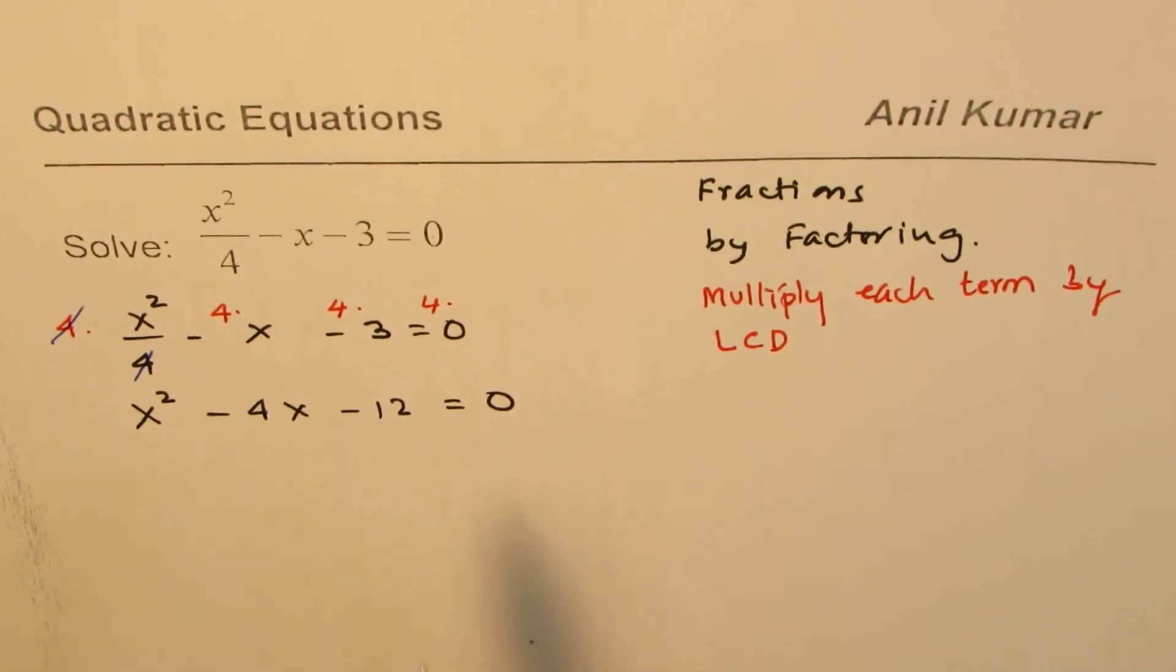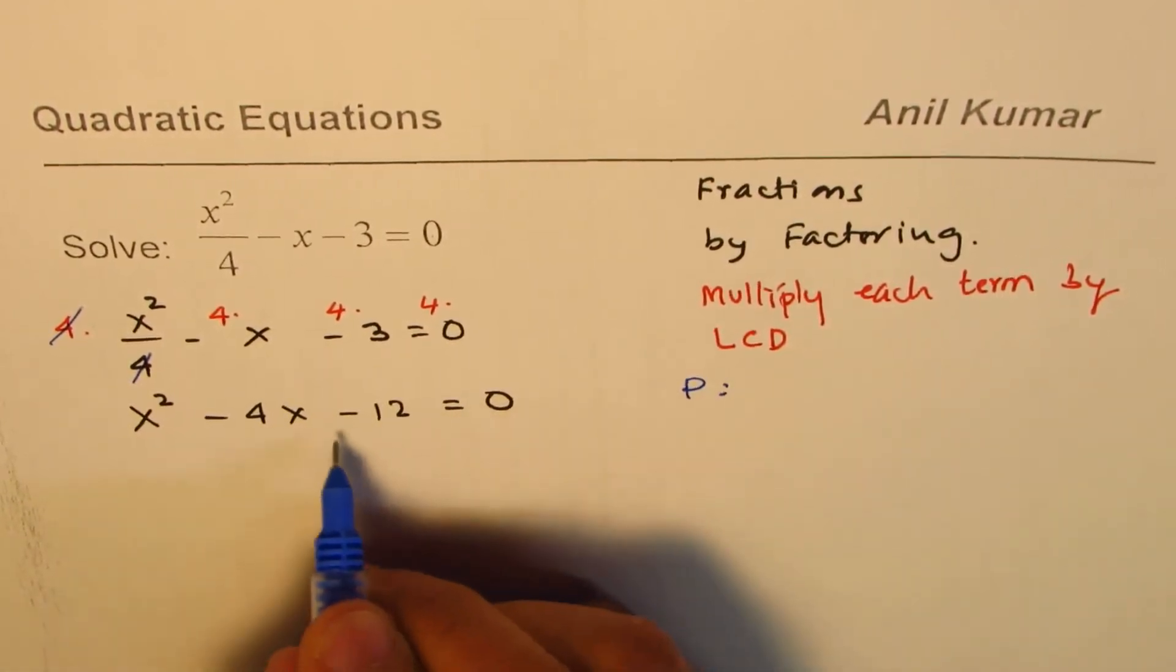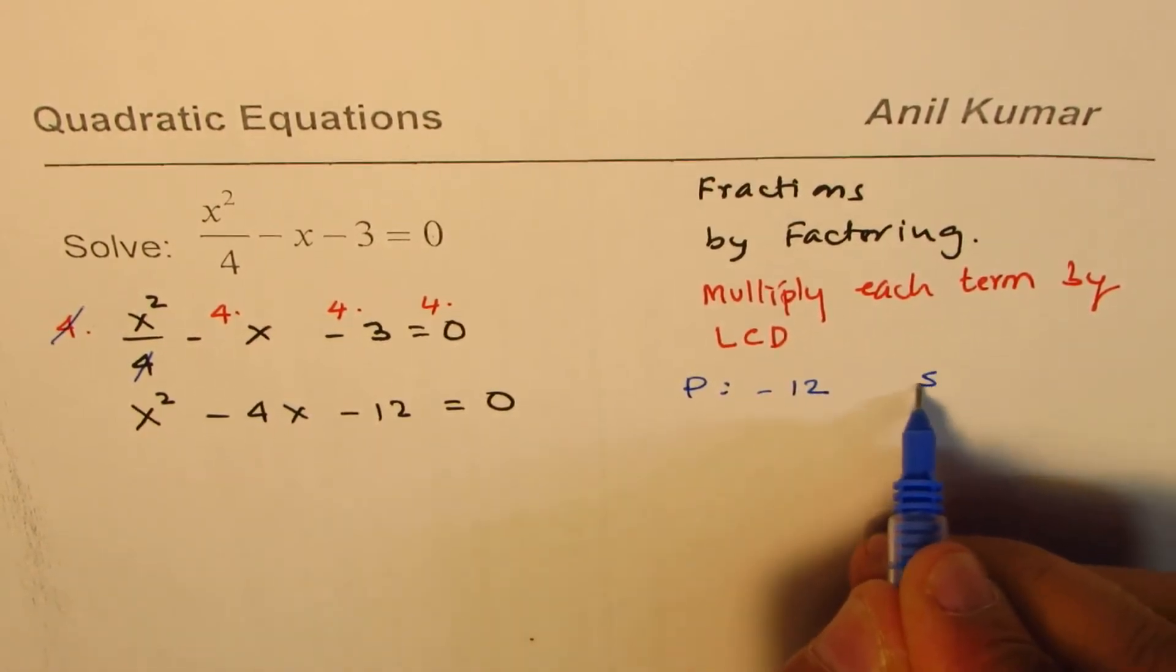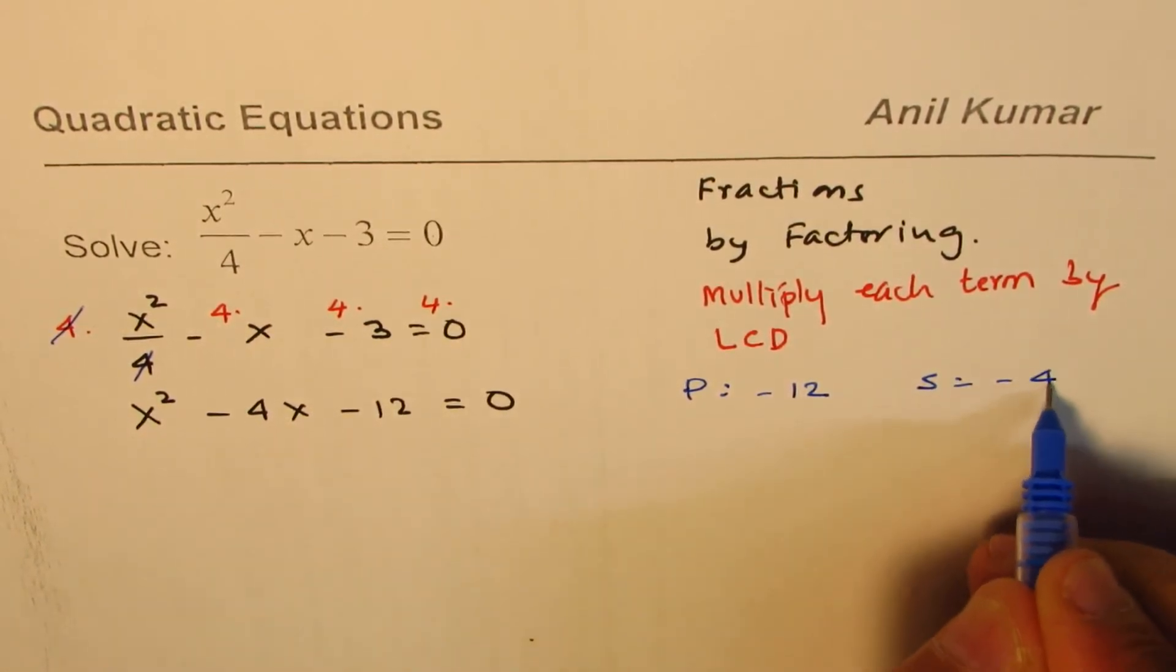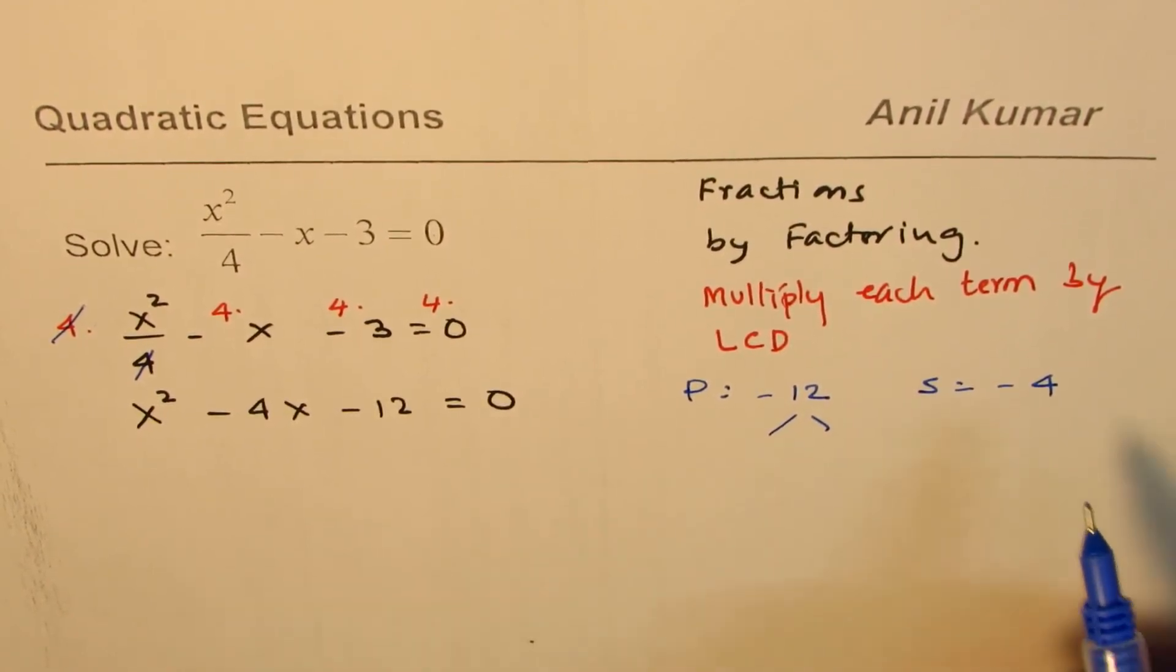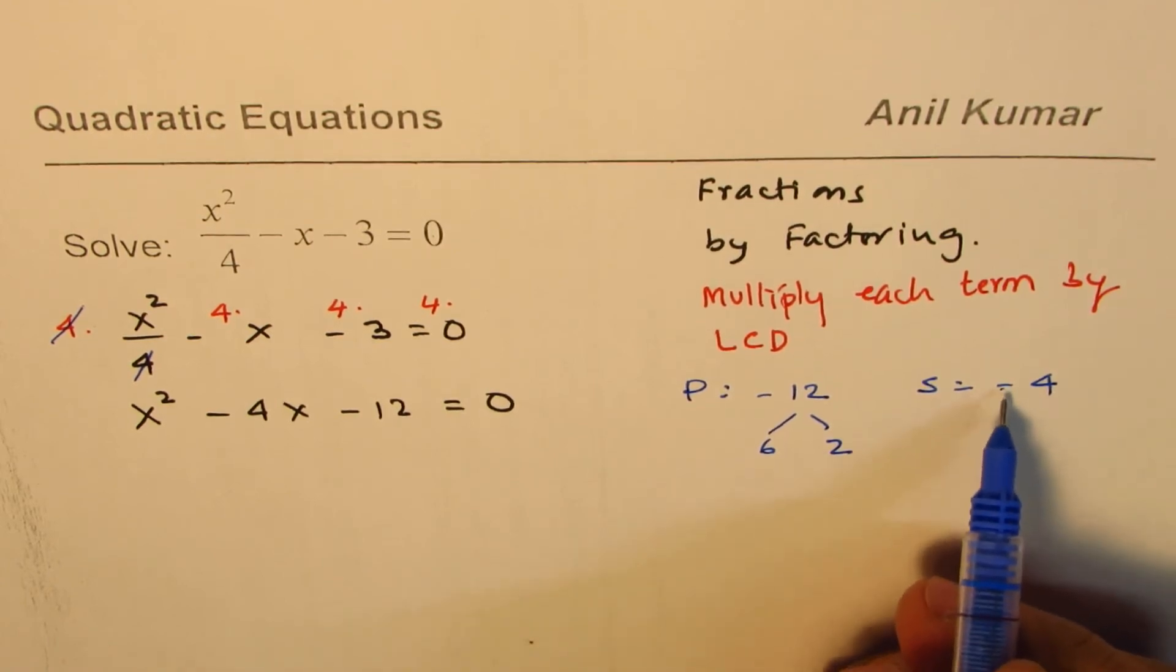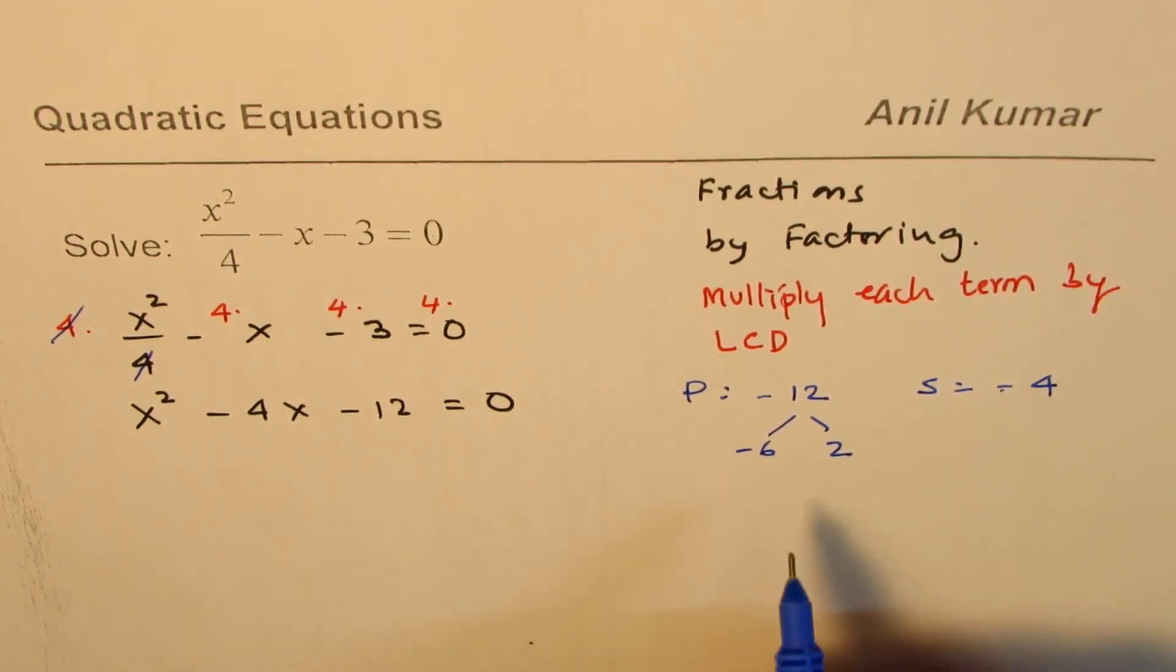Now we can factor using product and sum. So we're looking for product of minus 12 and sum of minus 4. The two numbers could be you can try 6 and 2 for example is a good combination. Since the sum is negative the higher number should be negative.